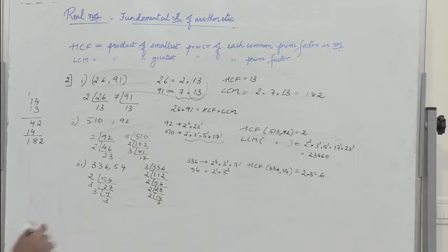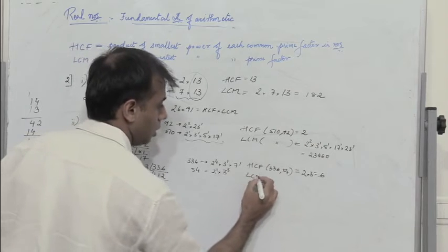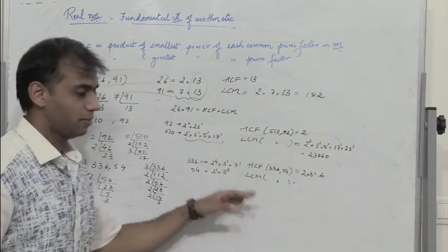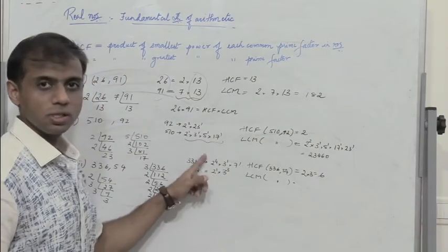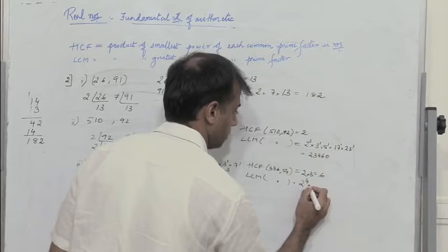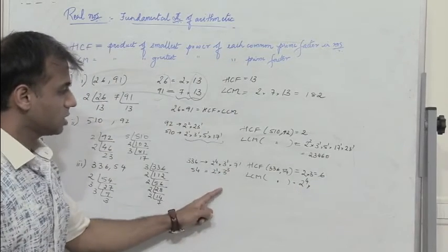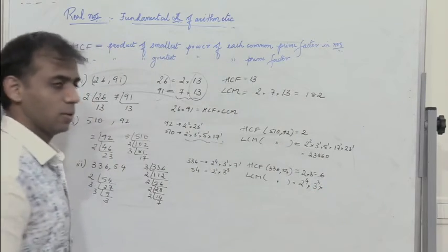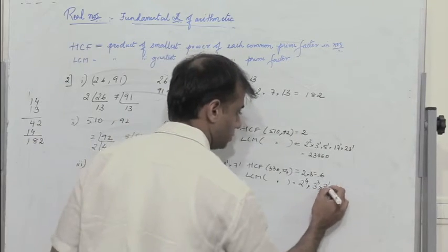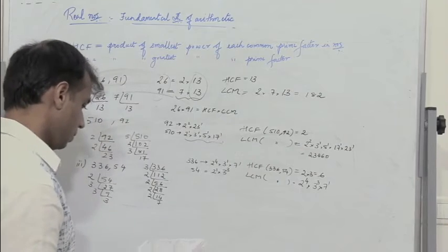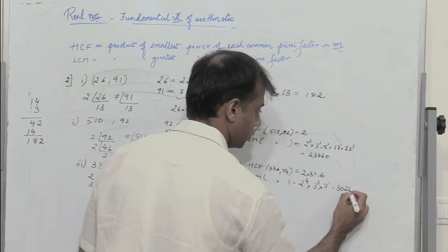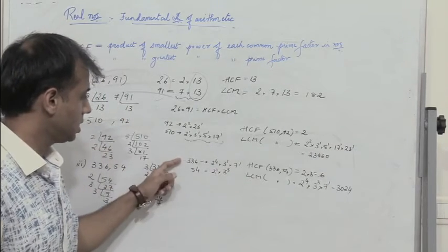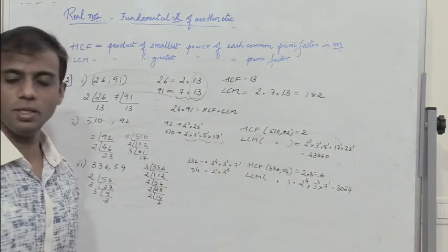To find the LCM of 336 and 54, we take the greatest power of all prime factors. Greatest power of 2 is 2⁴, greatest power of 3 is 3³, and we also have 7¹. So LCM = 2⁴ × 3³ × 7 = 3024. We can again observe that HCF × LCM equals the product of the two numbers.